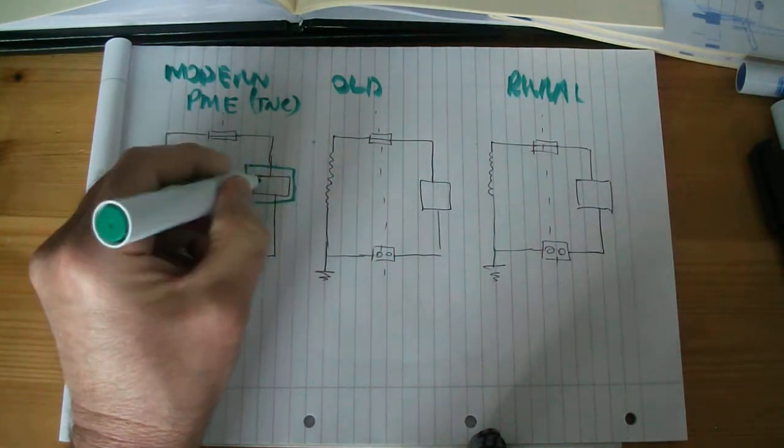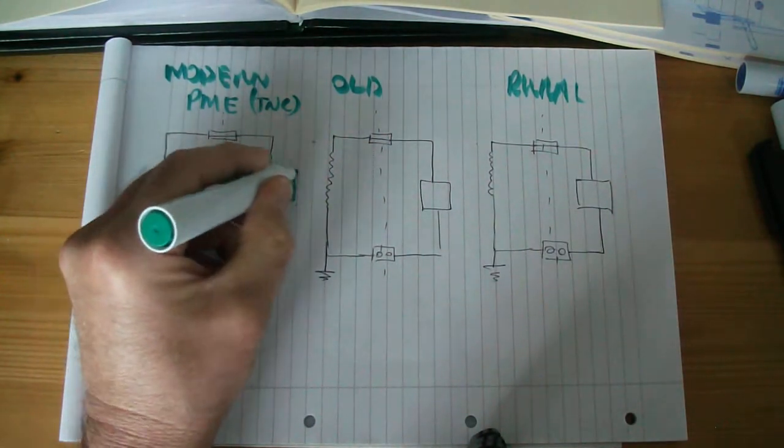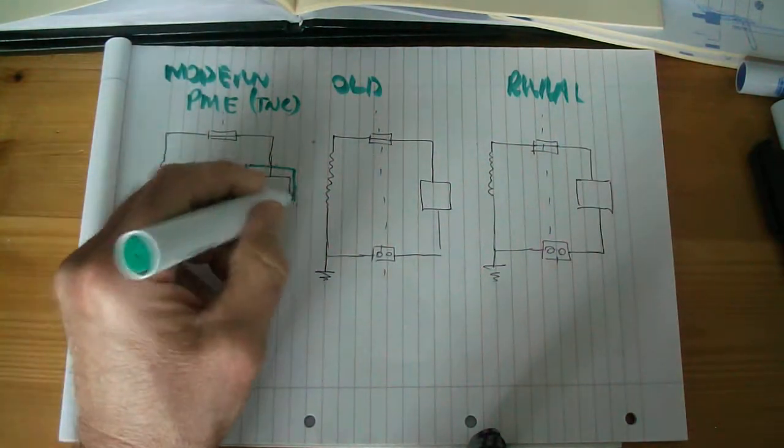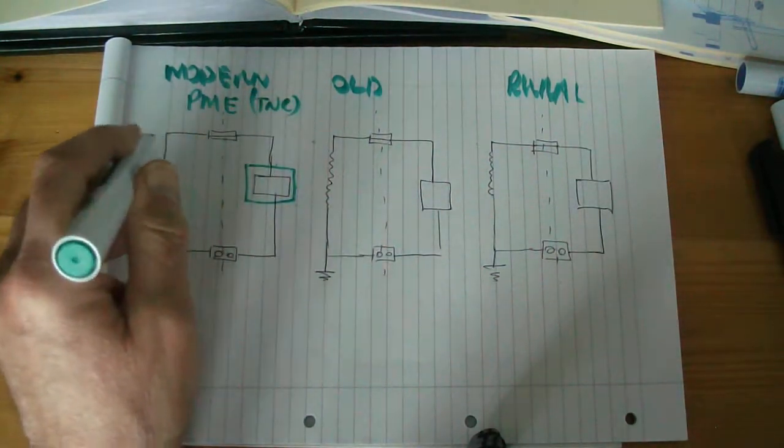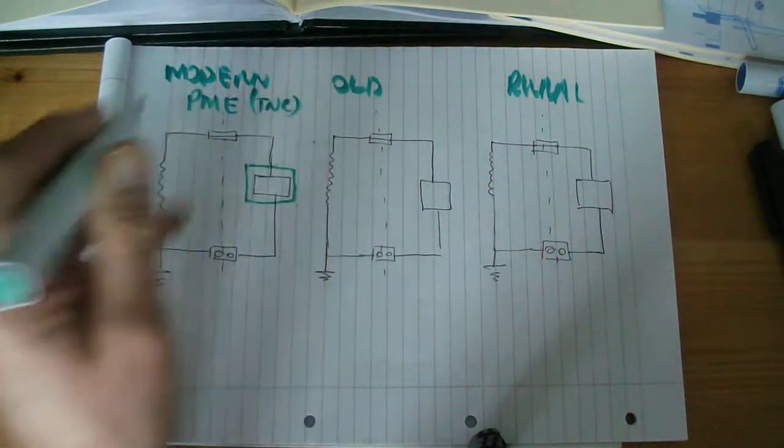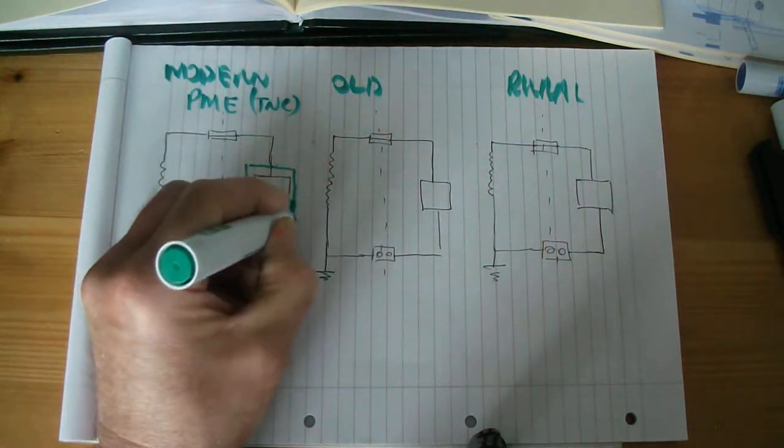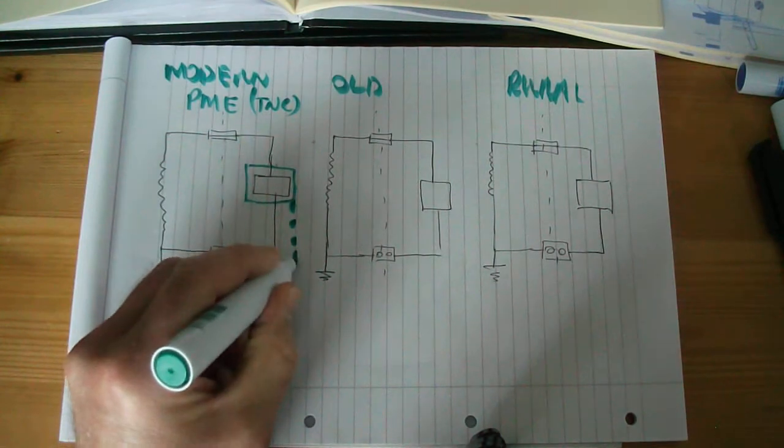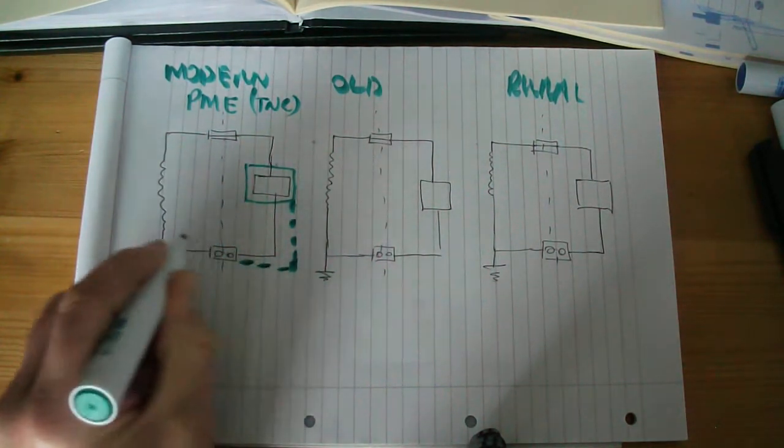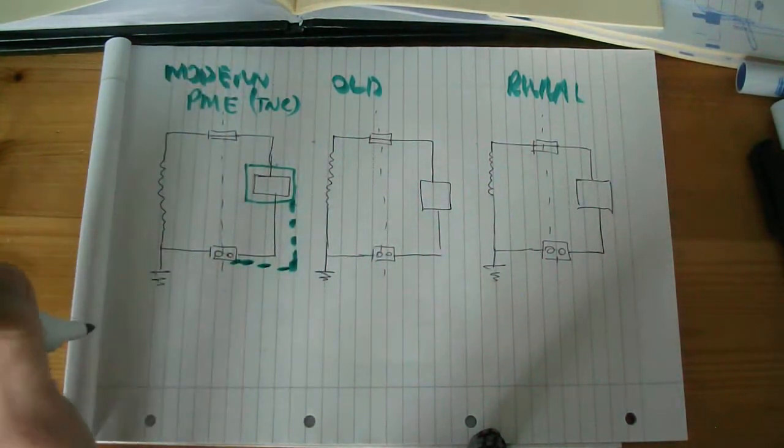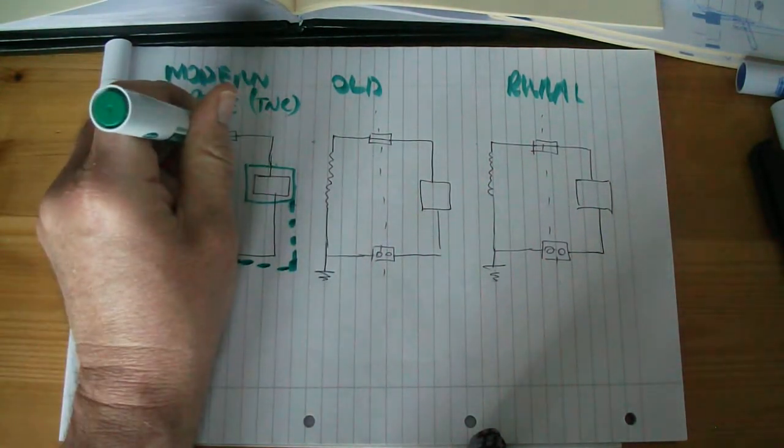The earth metalwork - imagine this is a washing machine and this is the case of the washing machine. Well, effectively the washing machine, this is a very simplified diagram, sort of like the distribution board really. The earth will find its way back via an earth conductor back to the link at the cutout. So that's the fuse.